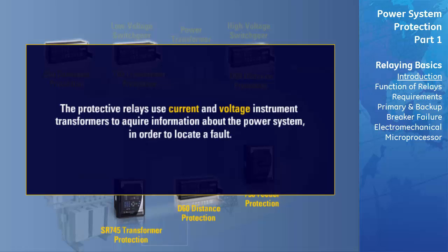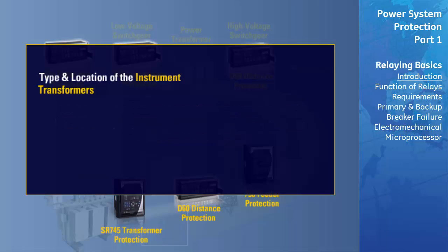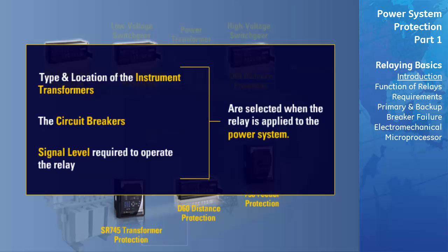The protective relay uses current and voltage instrument transformers to acquire information about the system, such that a fault can be located. The type and location of the instrument transformers, the circuit breaker which is to be tripped by the protective relay when it operates, and the signal level required to operate the relay is selected when the relay is applied to the power system.